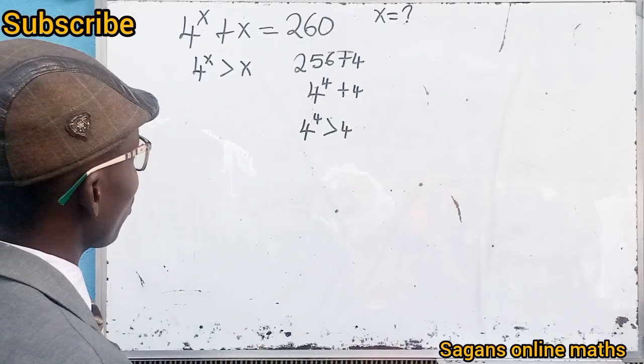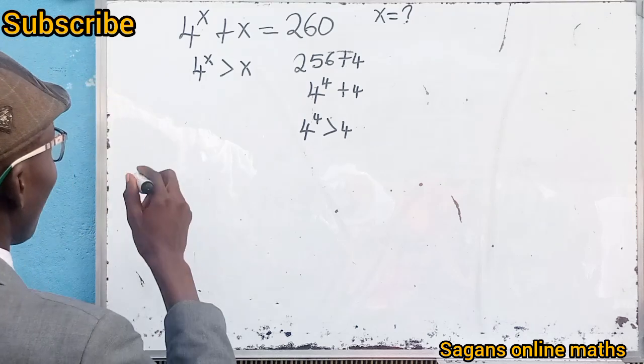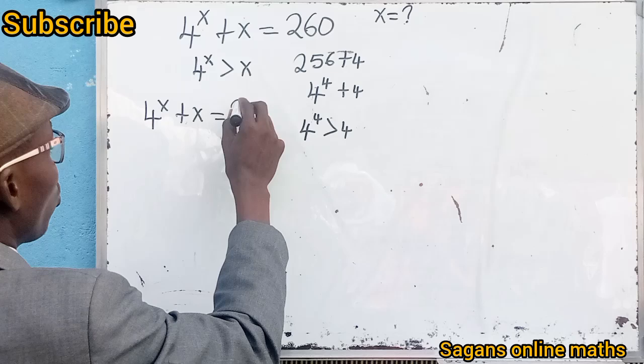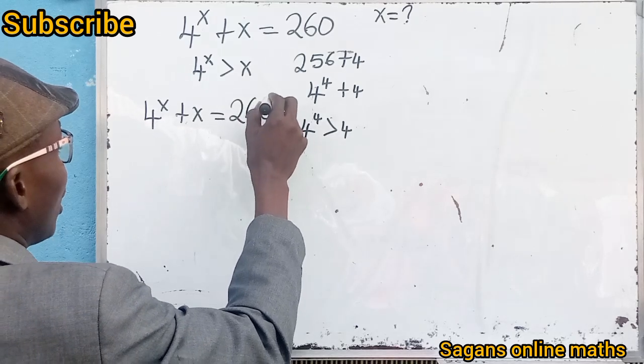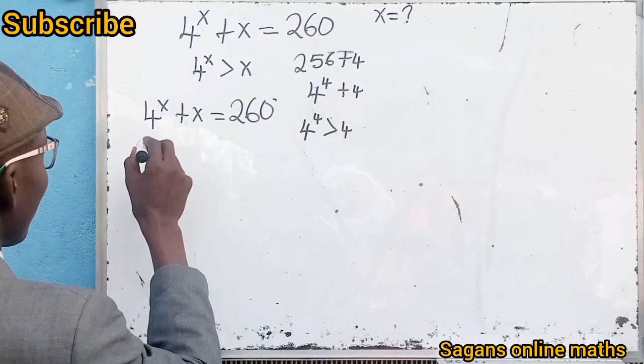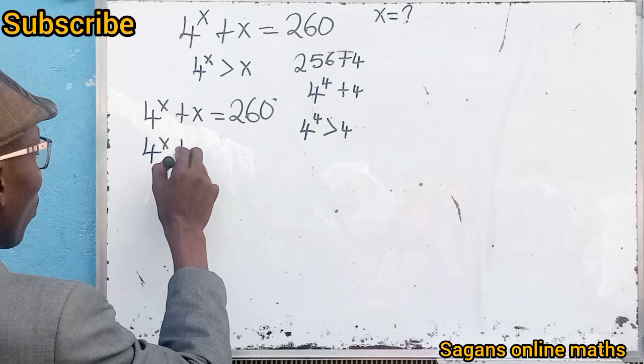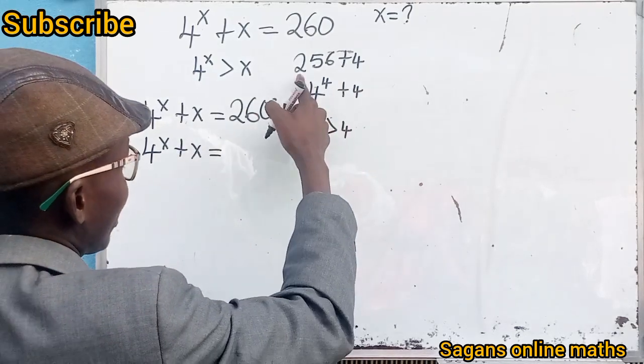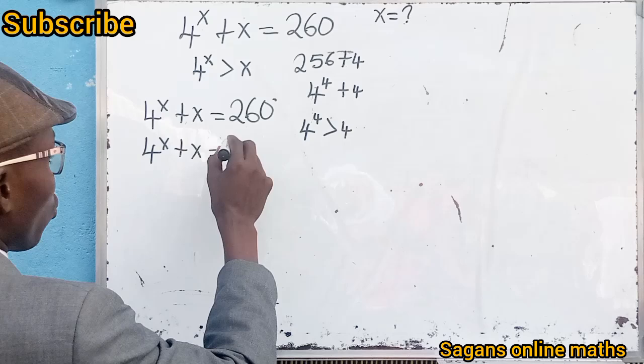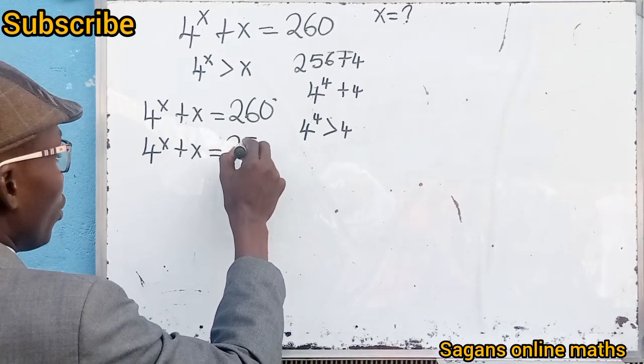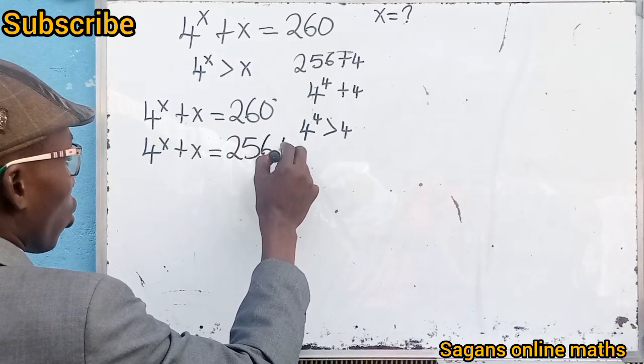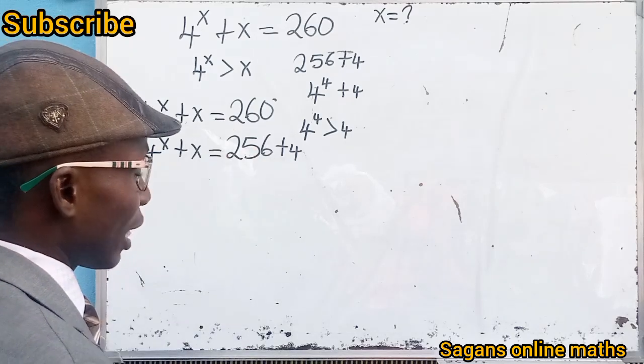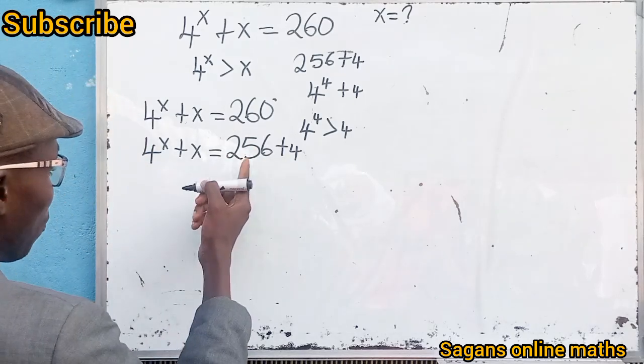Let's solve it. That means 4 raised to the power of x plus x equals 260. Now, this is 4 raised to the power of x plus x, and note that this is greater than x. This is 256 plus 4.